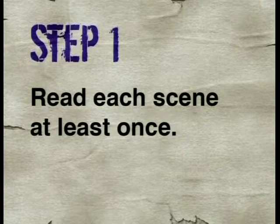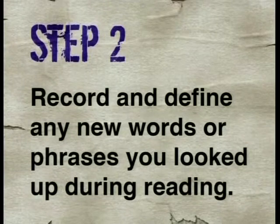Here is the first step: reading for understanding. Read each scene at least once — even if you don't understand every word, this will give you a good overview of the scene. It is also useful to read the part of the story that the scene covers from a version written as a story, to help you understand the plot and characters before you decode the language. Record and define any new words or phrases you looked up. An annotated copy is particularly useful here. For words not defined there, look them up in a dictionary and use a pencil to note them in the margin or in a separate notebook. This will save you having to look them up later.